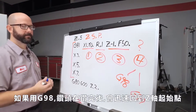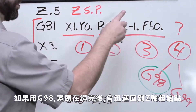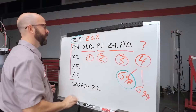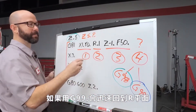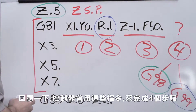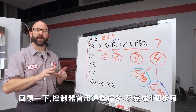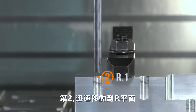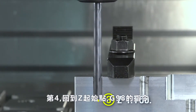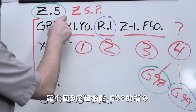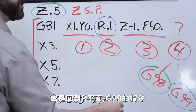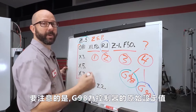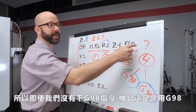If we use a G98, the tool, after it's done drilling the hole, is going to rapid back up to that Z starting position we talked about earlier. If we use a G99, that tool is going to rapid back to our R plane. To recap, the control uses the same order of operations for all holes — position XY, rapid to R plane, feed to Z depth, then either rapid back to Z starting position if G98 was commanded, or rapid back to the R plane if G99 was commanded. It's worth noting that G98 is used by the control by default, so even though we haven't commanded a G98, we're still using it.